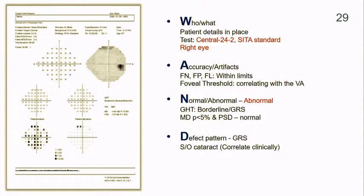The next report is again a right eye report using SITA Standard 24-2. Reliability indices are well within acceptable limits — fixation loss, false positive, false negative — and gaze signals at the bottom are also good. Foveal threshold correlates well with visual acuity. GHT says it is borderline or a generalised reduction in sensitivity. Looking at the total deviation plot, we see a generalised defect, but the pattern deviation appears fairly normal. This is possibly a case of cataract or any other media opacity, not associated with glaucoma — again, clinical correlation is required.